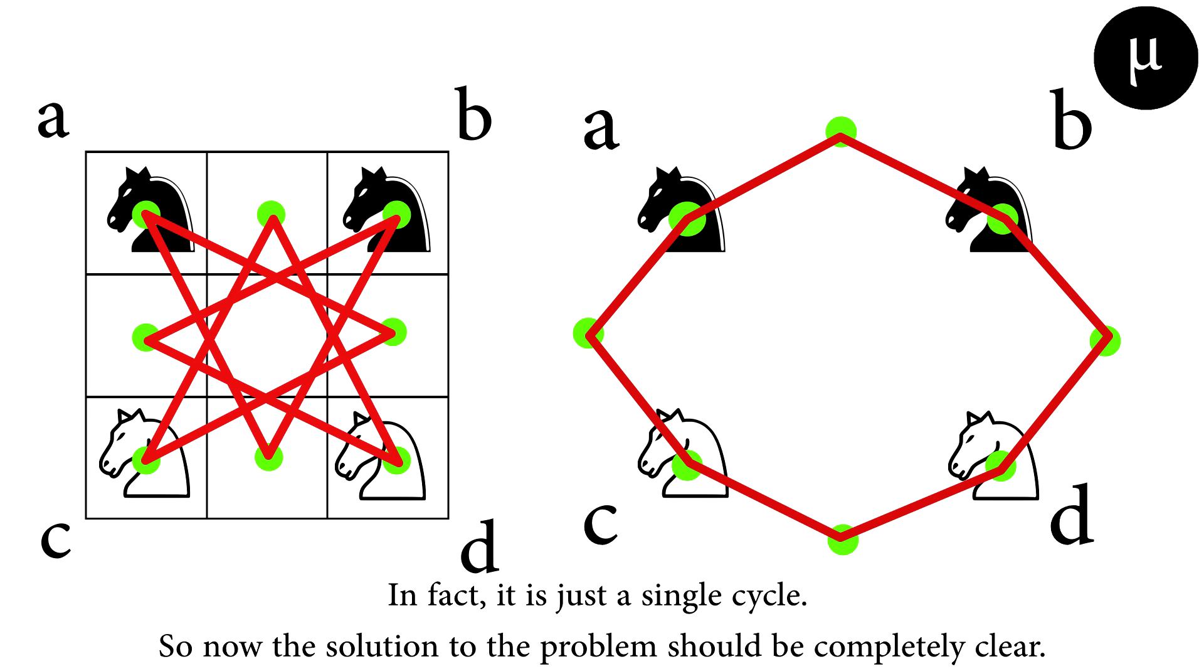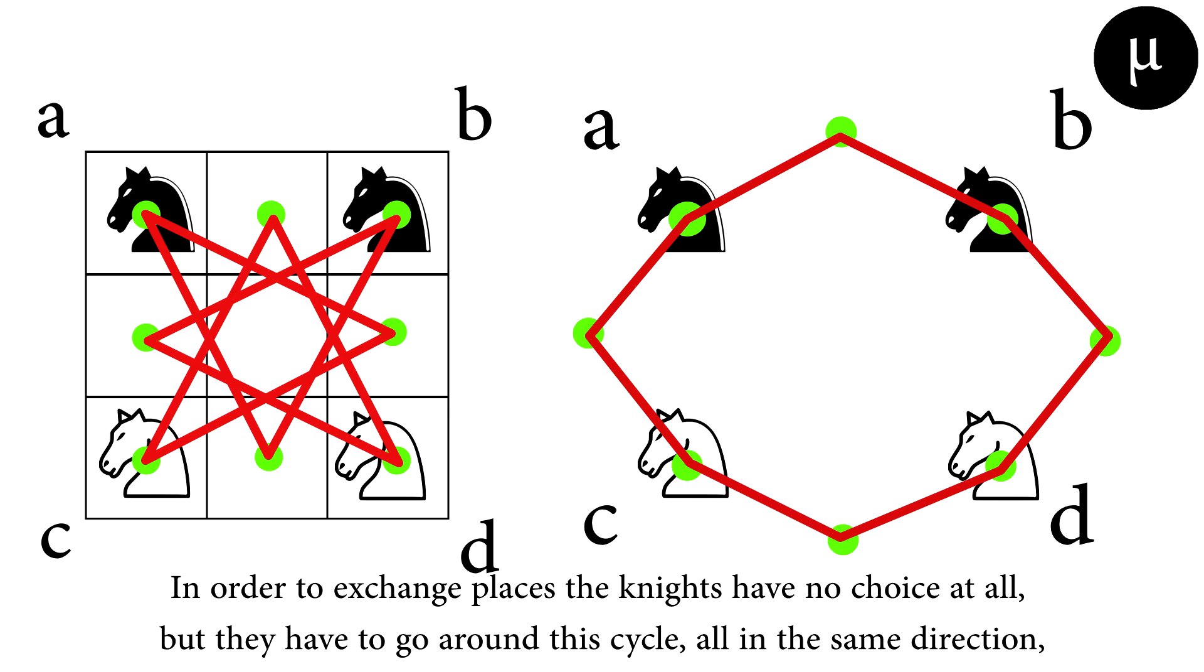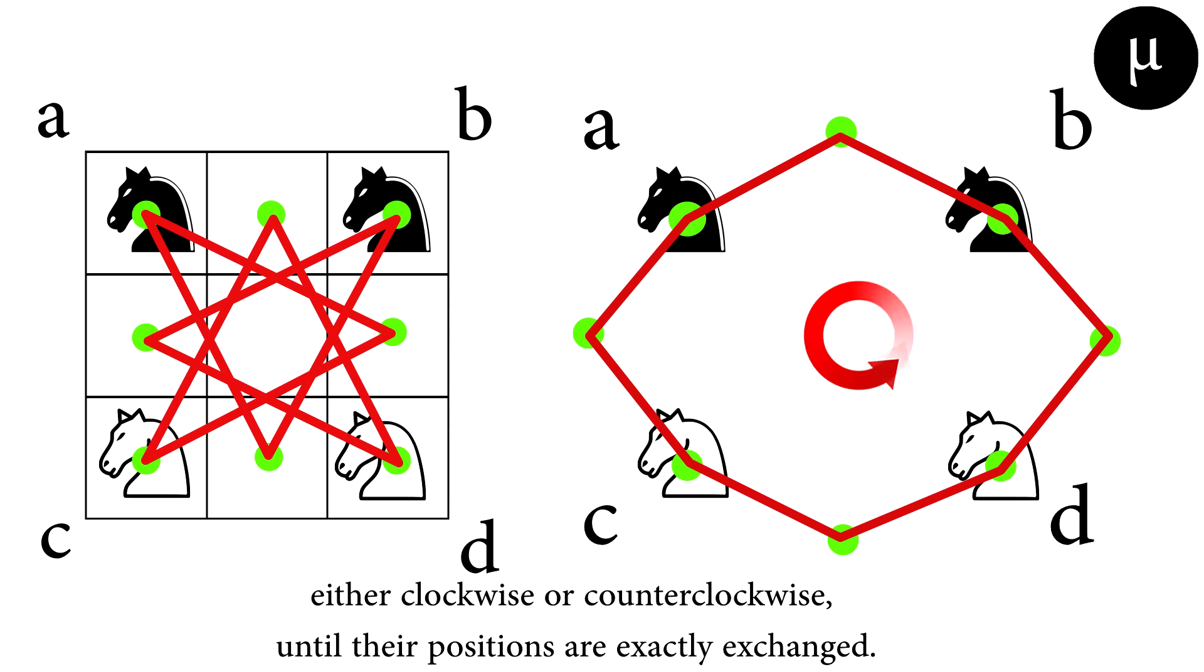So now the solution to the problem should be completely clear. In order to exchange places, the knights have no choice at all, but they have to go around this cycle all in the same direction, either clockwise or counterclockwise, until their positions are exactly exchanged.